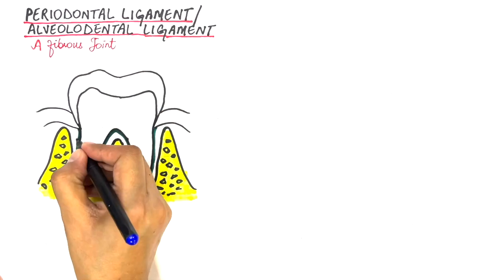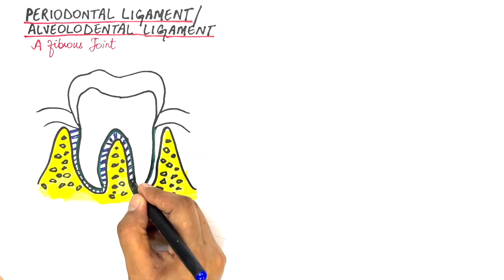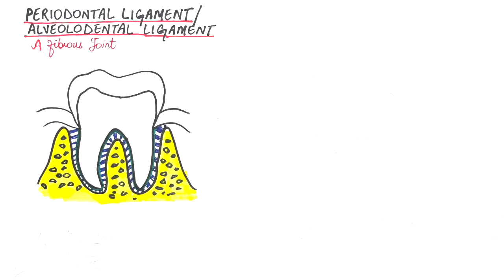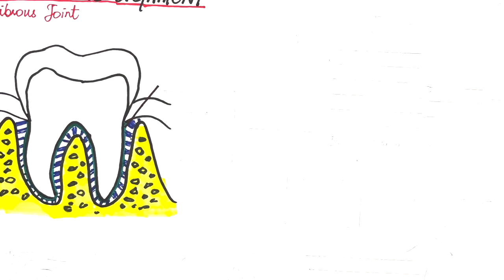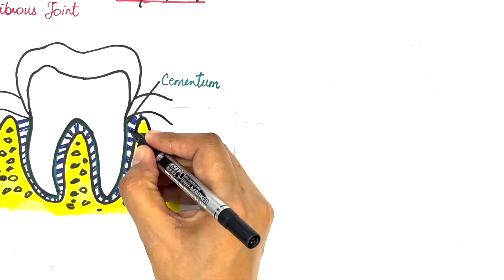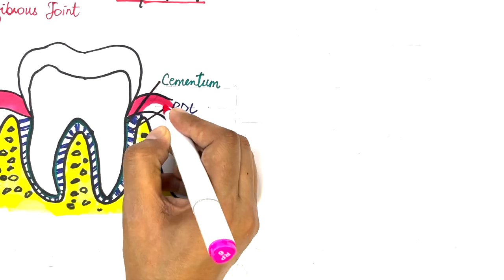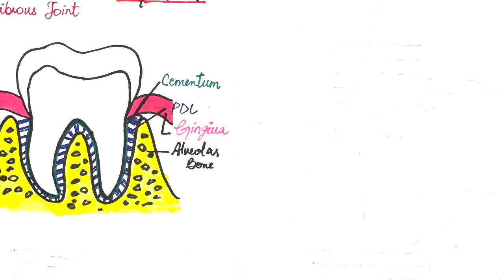The PDL is located in between the two hard tissues of cementum and alveolar bone. Together, the cementum, alveolar bone, the gingiva, and the periodontal ligament make up the periodontium of the tooth.